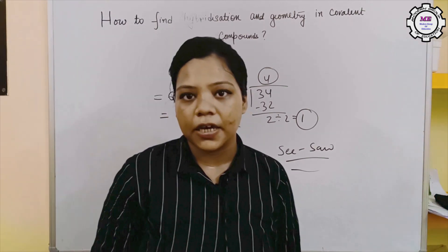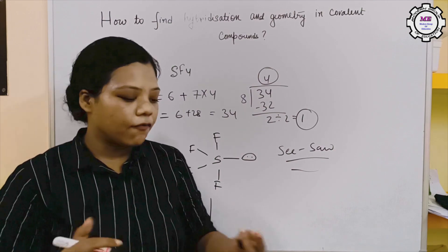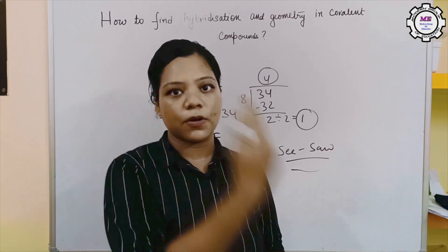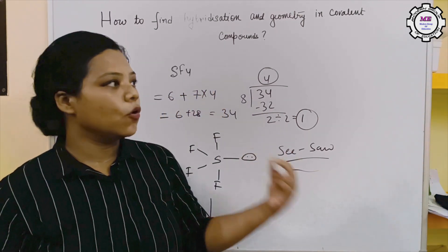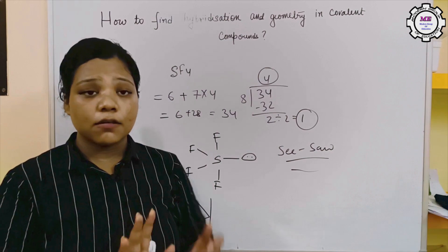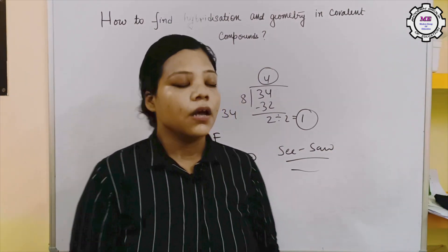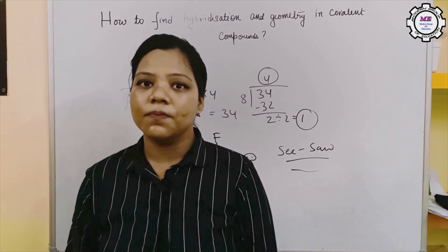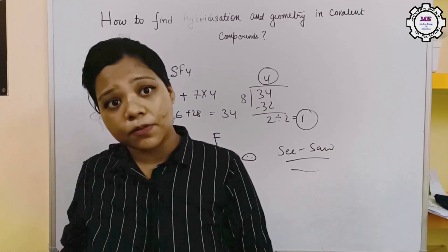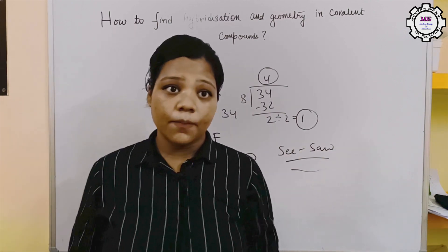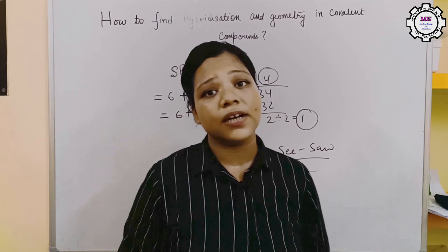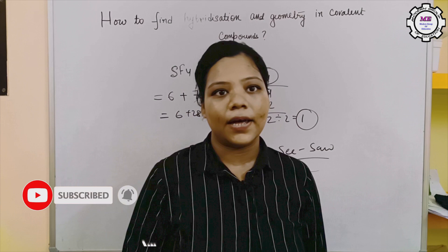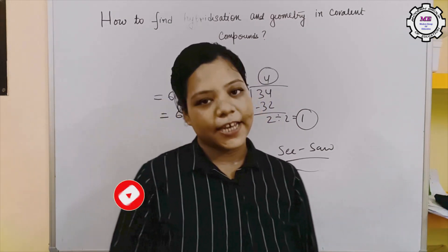Hopefully you have understood all of this. We covered covalent compounds with positive charges, negative charges, and lone pairs. This is a very important topic. If you have any problems or want more types of compounds solved, please comment below. There are certain types of compounds that specifically appear in exams, so if you require more videos on this topic, please comment, subscribe, and like this video. Take care, bye.